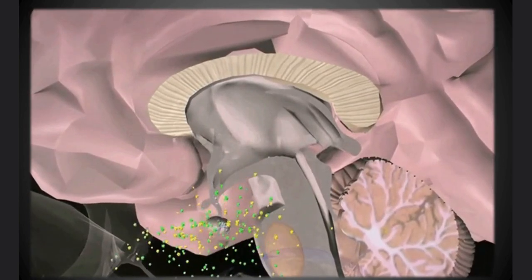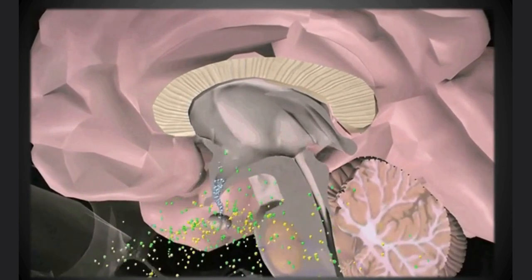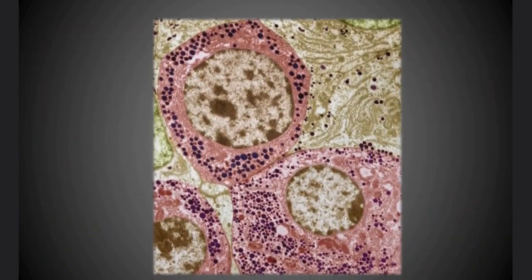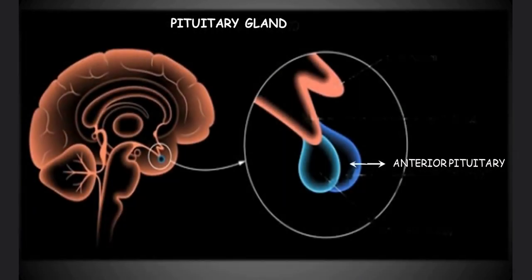For starters, in healthy individuals, growth hormone is a hormone synthesized and secreted by anterior pituitary cells called somatotrophs which are located in the anterior pituitary or the front lobe of the pituitary gland. The pituitary cells release between 1 and 2 milligrams of the hormone each day. It stimulates the growth of essentially all tissues of the body, including bone.